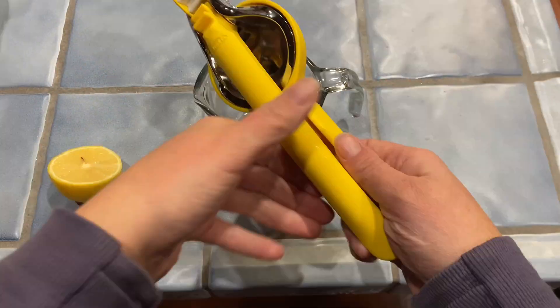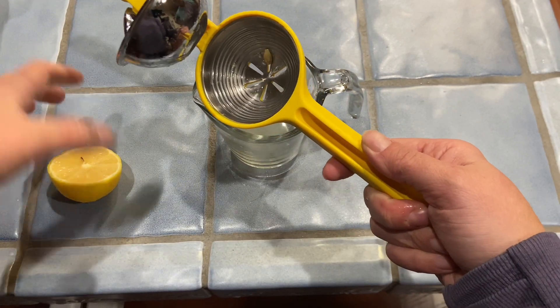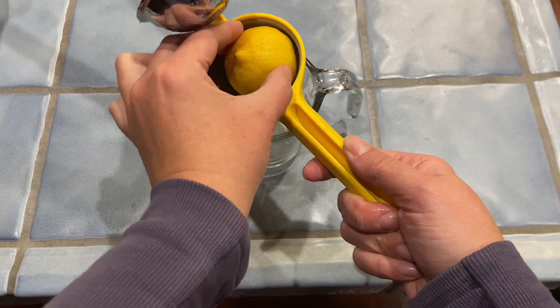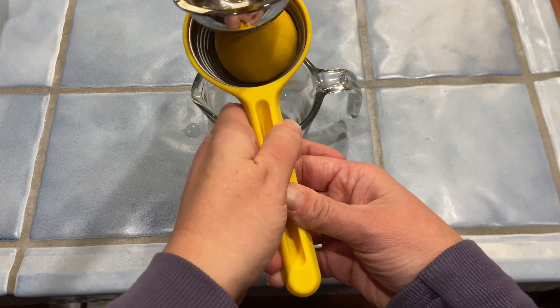This juicer feels really good in your hands. The yellow part and the handles are smooth finish and it's also stainless steel. It also makes it so easy to get the juice out of your fruit.